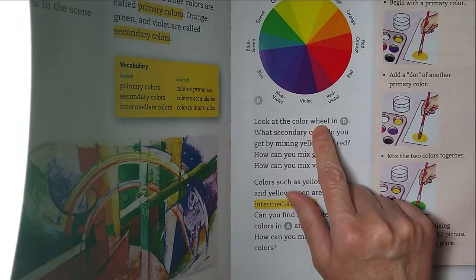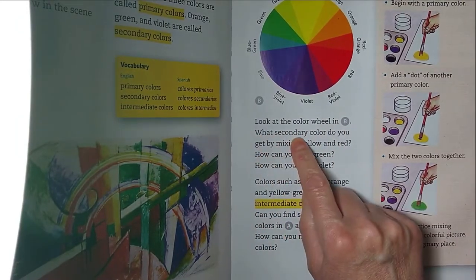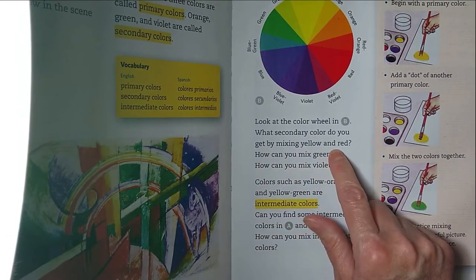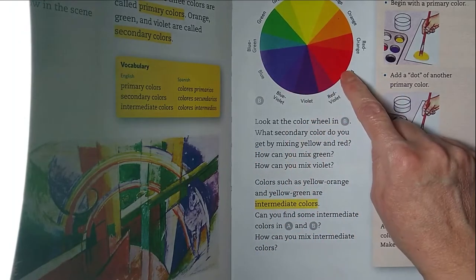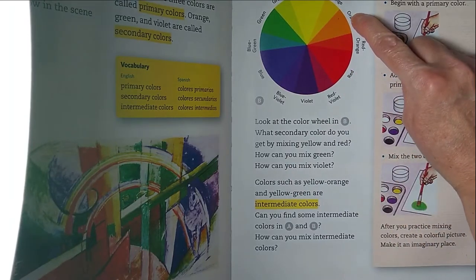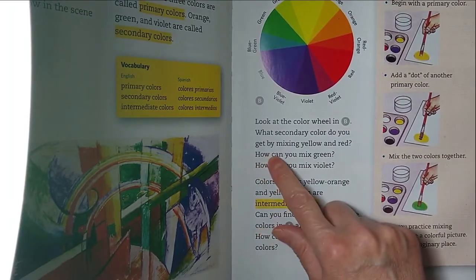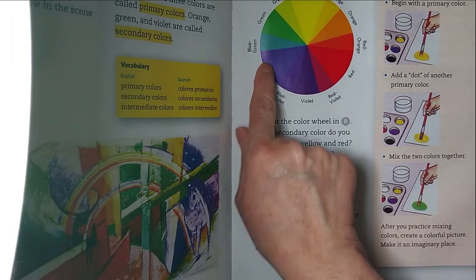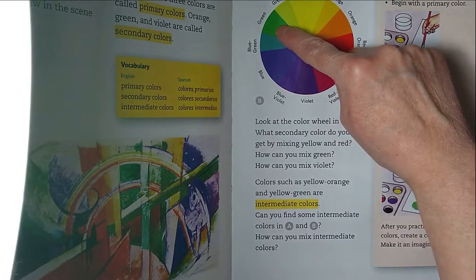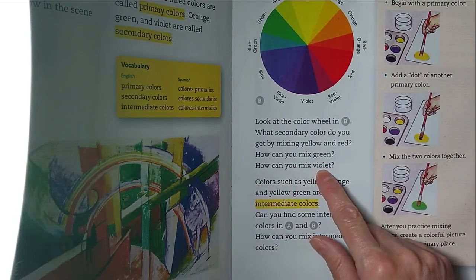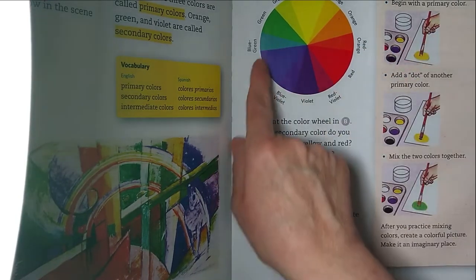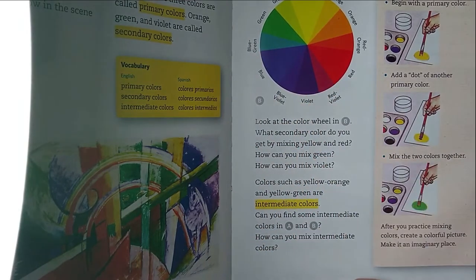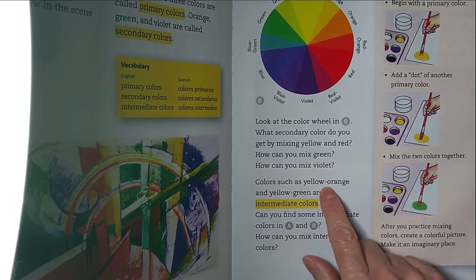Look at the color wheel. What secondary color do you get by mixing yellow and red? Here's yellow and red and you get orange, right? Who remembers how you can mix green? Blue and yellow make green. How can you mix violet or purple? Blue and red make violet or purple.